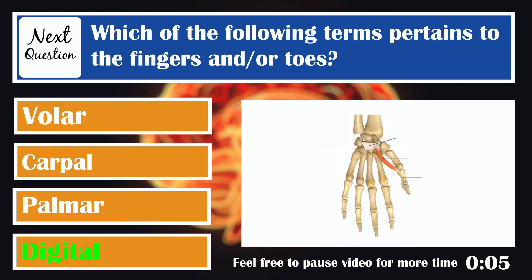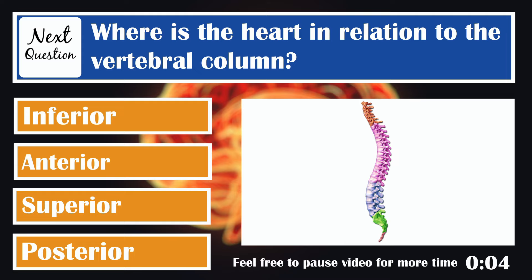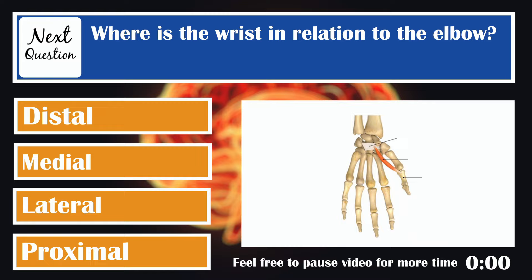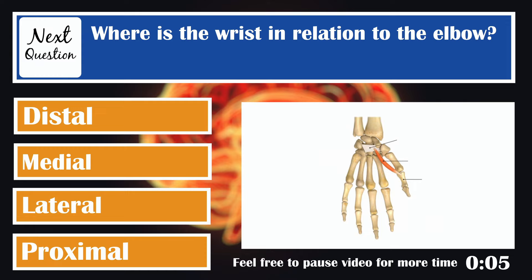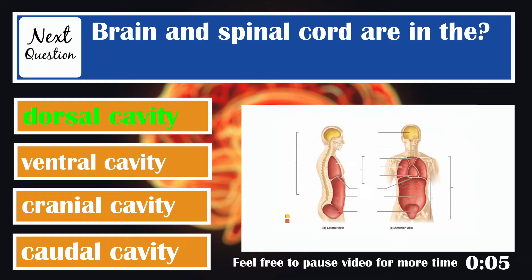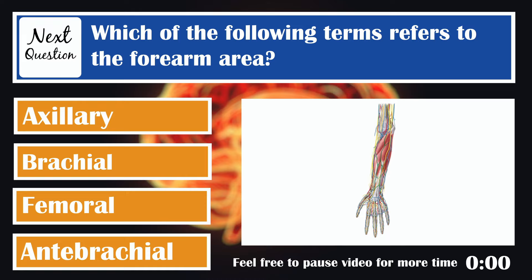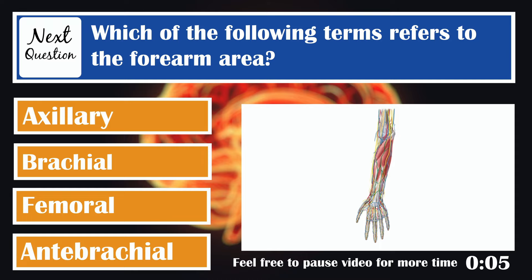Where is the heart in relation to the vertebral column? Anterior. Where is the wrist in relation to the elbow? Distal. The brain and spinal cord are in the dorsal cavity, also known as posterior. Which of the following terms refers to the thigh area? Femoral. Which of the following terms refers to the forearm area? Antebrachial.